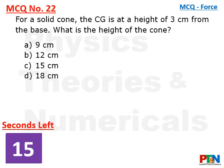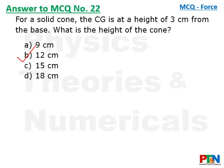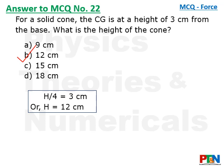Next MCQ: for a solid cone, the CG is at a height of 3 cm from the base. What is the height of the cone? 15 seconds timer. For a solid cone, CG is at h/4 from the base. So h/4 equals 3 cm, therefore h equals 12 cm.